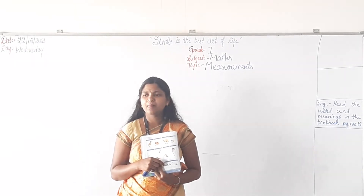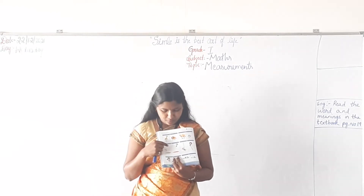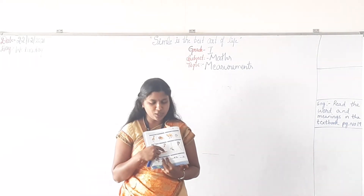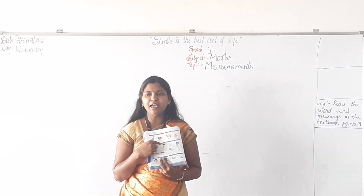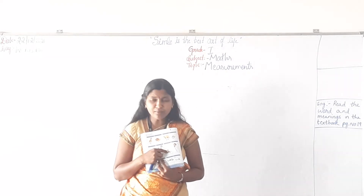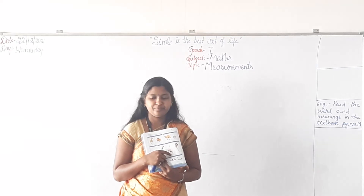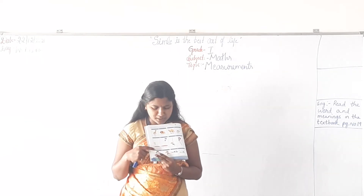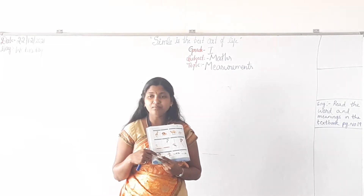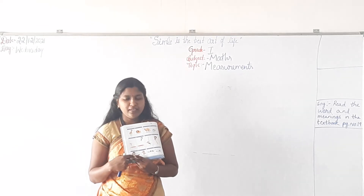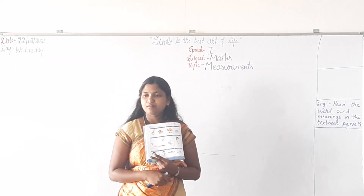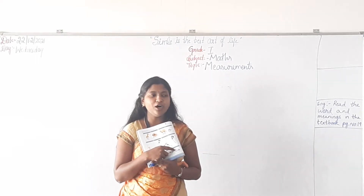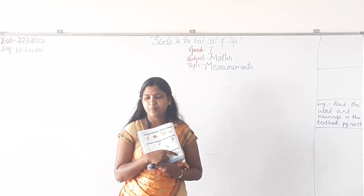Next box: 'low.' Who is low? The first boy — he is low. Tick the first boy. The boy is low and the girl is high. For low you have to tick it. Next box: 'near.' Who is near to the dog? The girl is near to the cat, right? Tick the first box. Next: 'far.' Which bird is far? The second box — the bird is far from the other bird. Tick the second box.